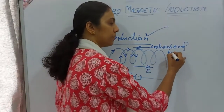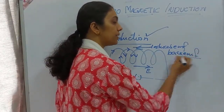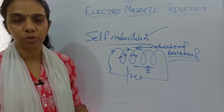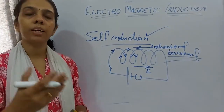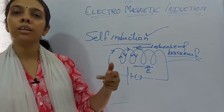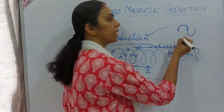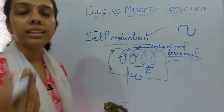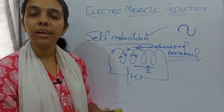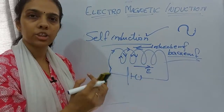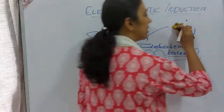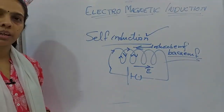Because of back EMF, the net EMF in the circuit is less than the applied EMF. This is why when alternating current is applied, the glow of a bulb varies continuously — the induced EMF keeps acting in the opposite direction, reducing the effective EMF. This property is called self-induction.